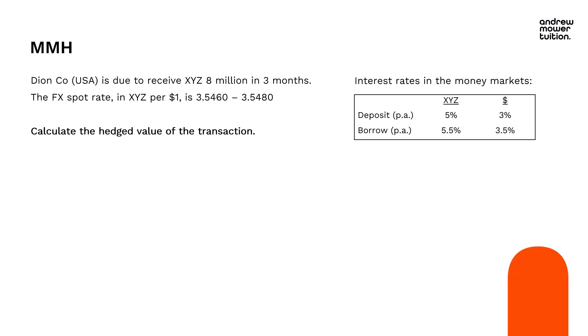In this example we've got Dion Coe, who are based in the USA. They're due to receive XYZ 8 million in three months' time. The foreign exchange spot rate in XYZ per dollar is 3.5460 to 3.5480. On the right we've got the interest rates in the money markets — the deposit and borrow rates in both XYZs and dollars. Both are per annum, so we are going to need to time-apportion them. The question asks us to calculate the hedged value of the transaction.